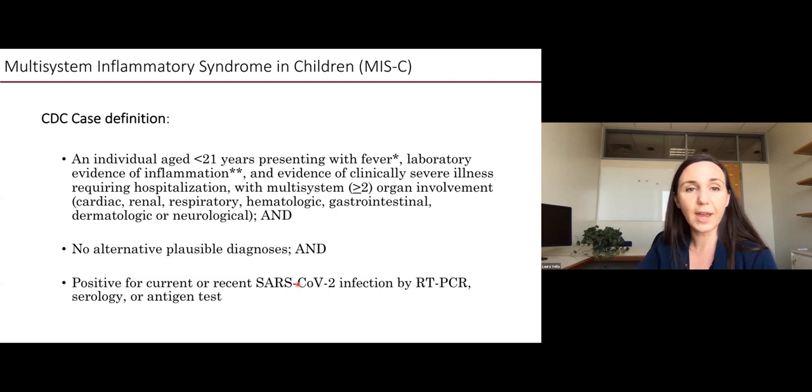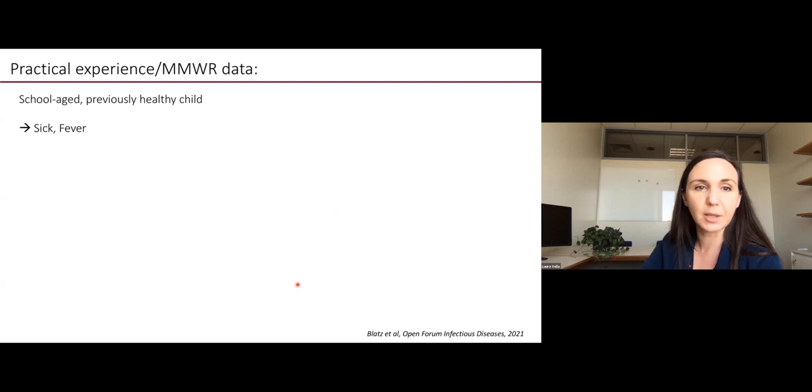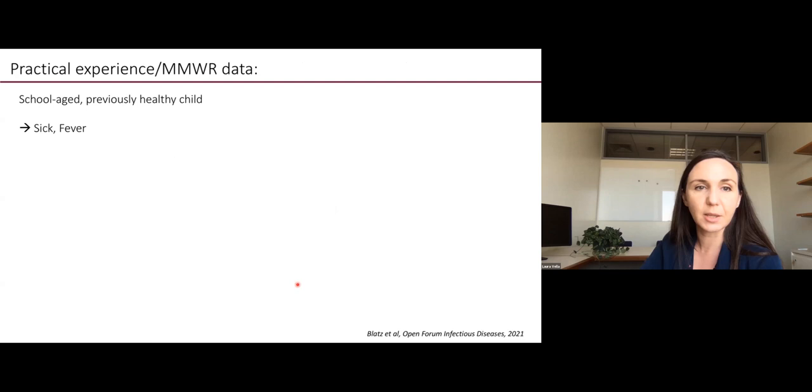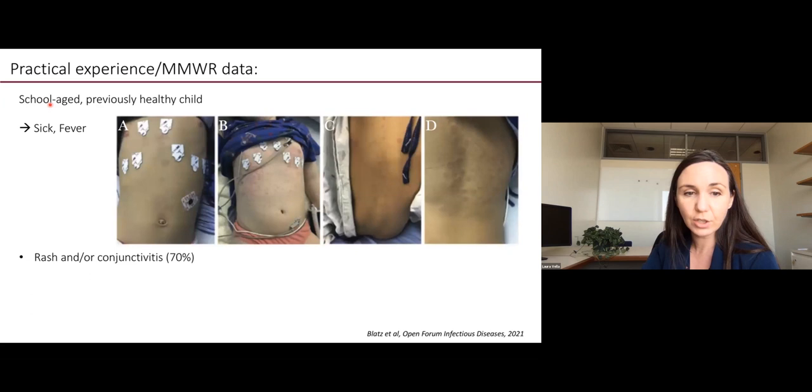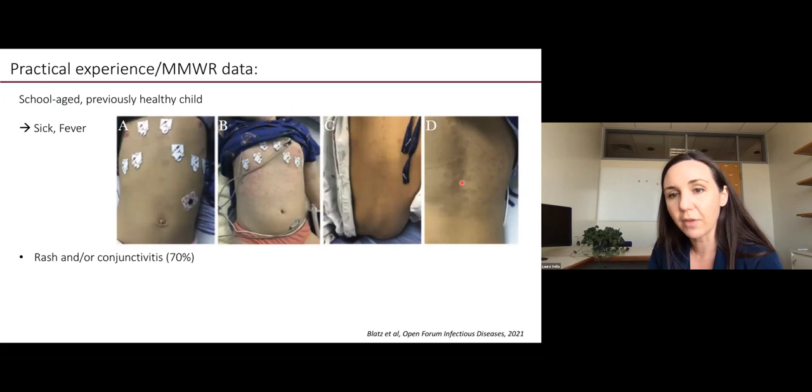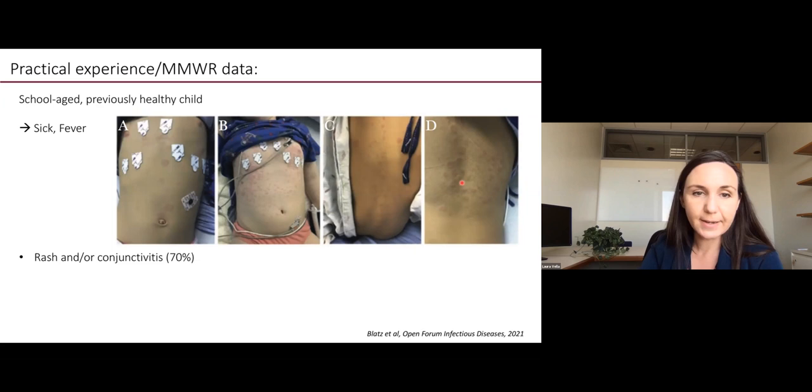What we have as a case definition from the CDC is a child or somebody under the age of 21 who's presenting with fever. They have to have some laboratory evidence of inflammation, and they need to be ill enough to be admitted to the hospital. Once you meet those criteria, then there has to be two organ systems involved, no alternative diagnosis, and then positive for SARS-CoV testing, either by PCR or serology.